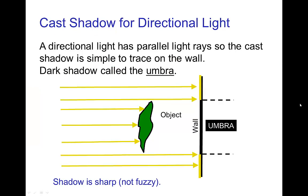Now the simplest kind of cast shadow comes from a directional light, so the light rays are all parallel and so the shadow that is cast on a surface is very simple. In this case, it just has the outline of the object and the shadow has all umbra.